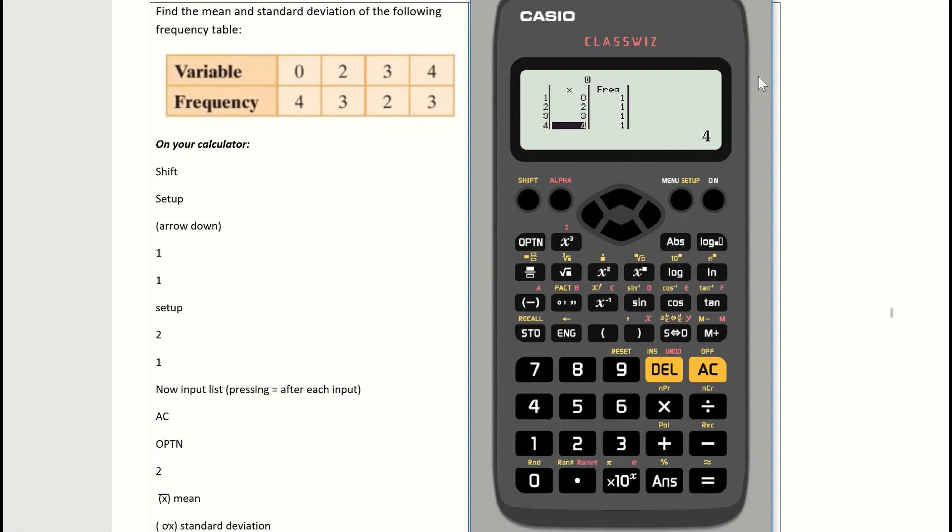Using the keypad in the center of your calculator, arrow to the right and the little black bar will appear in the frequency column. Arrow back up to my first variable, which was zero. The frequency that corresponds to zero is four, so type in four and hit equals. The frequency that corresponds to two is three, so press three equals. Then input two equals, and the final frequency is three equals.